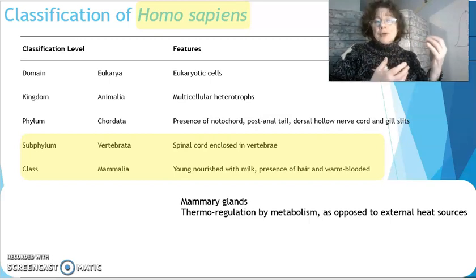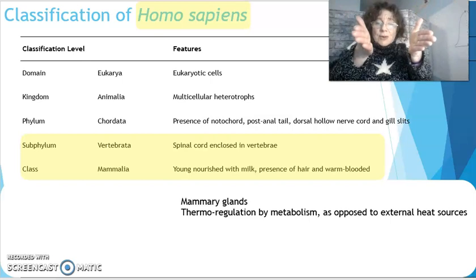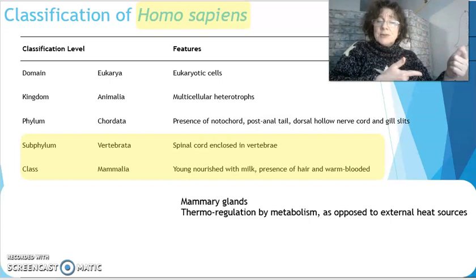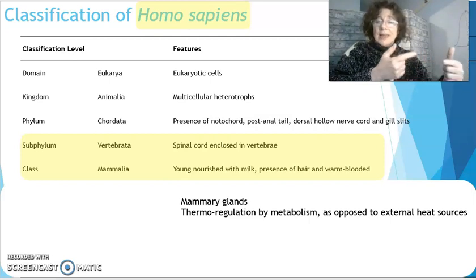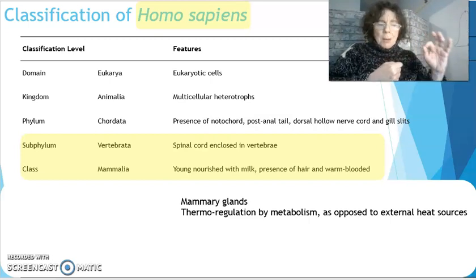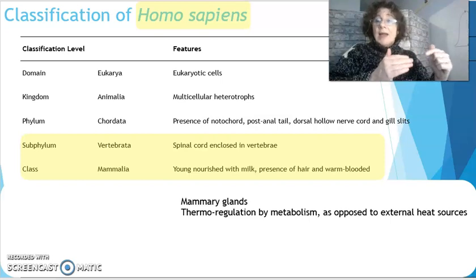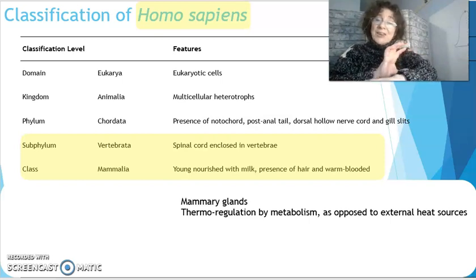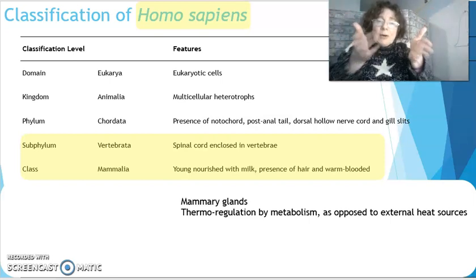Mammalia refers to the fact that this classification nourishes young with mammary glands for milk. It also refers to thermoregulation — monitoring the organism's temperature by metabolism rather than relying on external heat sources like the warmth of the sun. We rely on our own fuel to produce metabolism. Mammalia also refers to the fact that mammals have hair on their body, which aids thermoregulation. Hair helps protect us from cold; hair standing on end actually tries to trap heat along your skin.